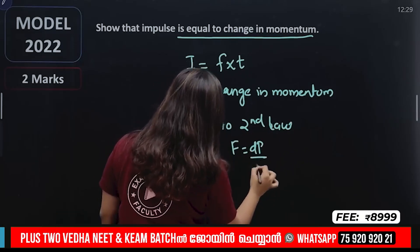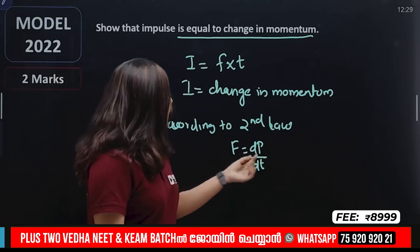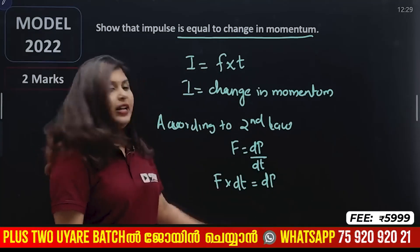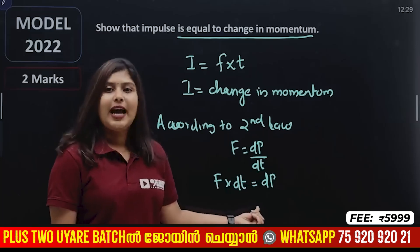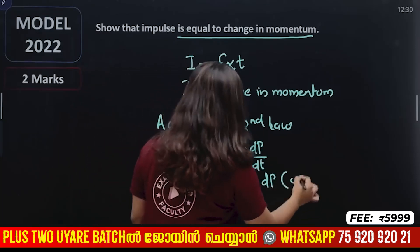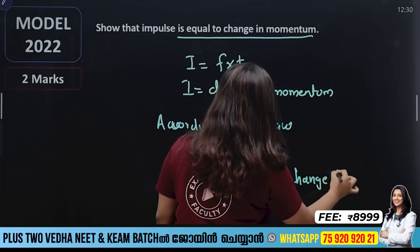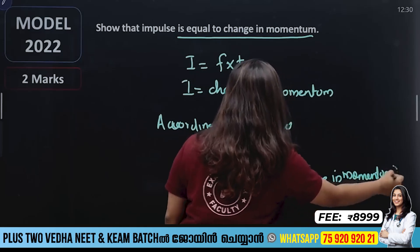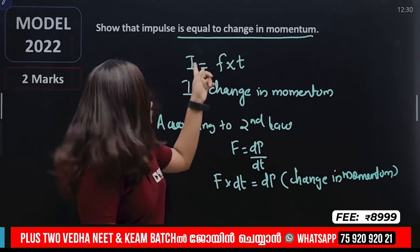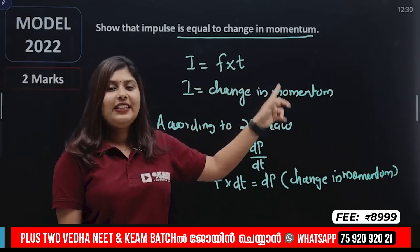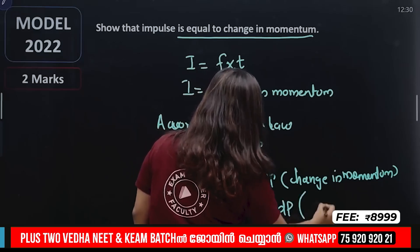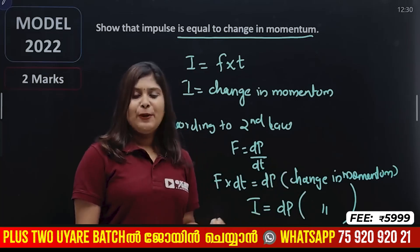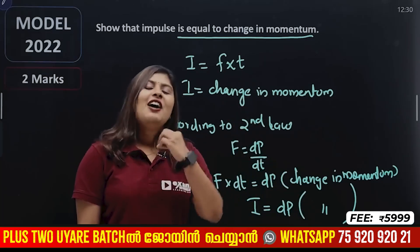From F equals dp by dt, rearranging gives f into dt equals dp. Here f into dt is force into a small time interval. dp is change in momentum. Impulse equals dp, that is change in momentum.